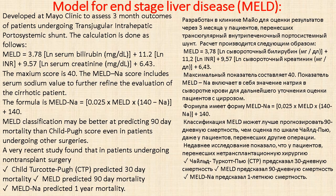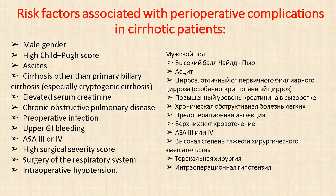MELD classification may be better at predicting 90-day mortality than Child score, even in patients undergoing other surgeries. A recent study found that in patients undergoing non-transplant surgery, Child score predicts 30-day mortality and MELD predicts 90-day mortality. MELD also predicts one-year mortality. Risk factors associated with perioperative complications in cirrhotic patients include: high MELD score, high Child score.